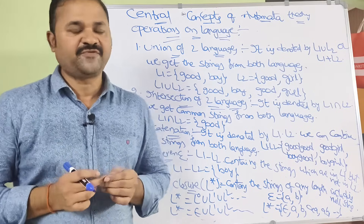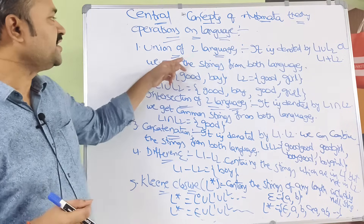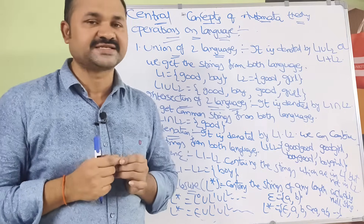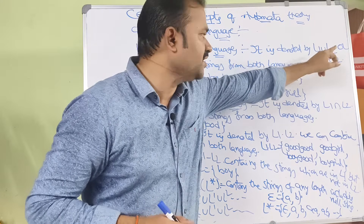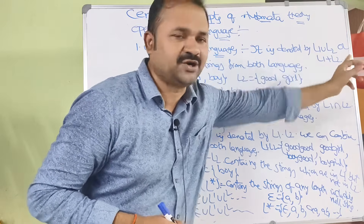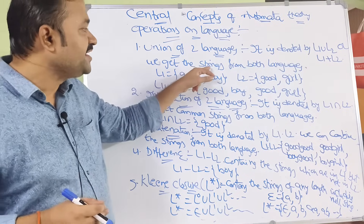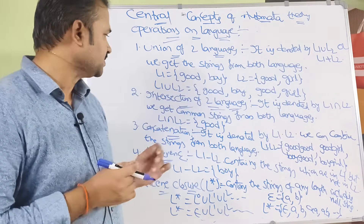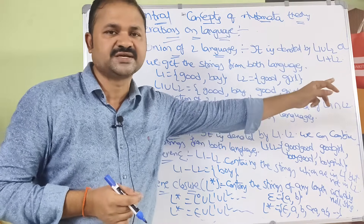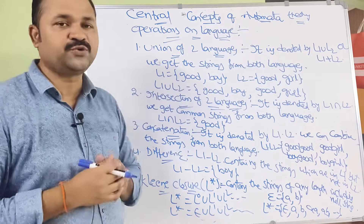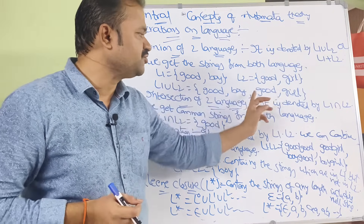Now let us see the operations on language. We can perform six operations. First is union of two languages. Union of L1 and L2 is denoted by L1 ∪ L2 or L1 + L2. We get strings from both languages. For example, if L1 = {good, boy} and L2 = {good, girl}, then L1 ∪ L2 = {good, boy, good, girl}.